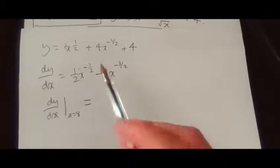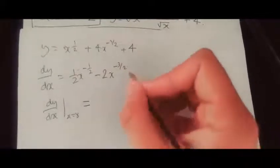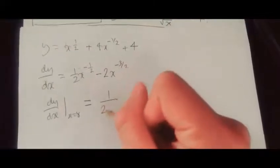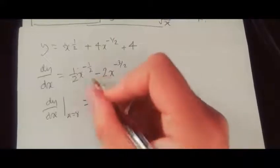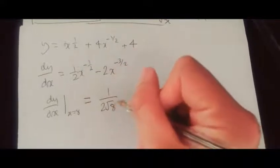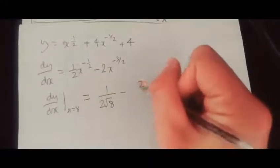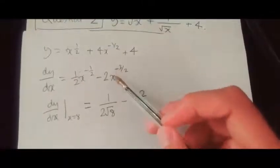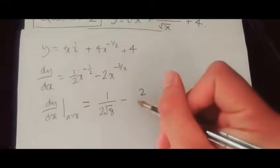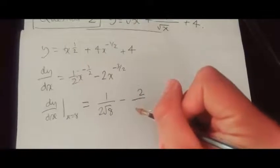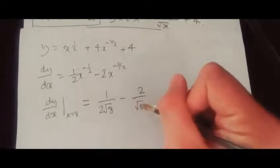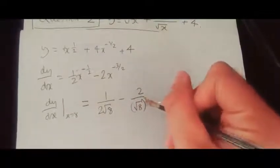We're going to put it into the same format as the question itself. We have 1 over 2 root x. When x equals 8, we replace it with 8, minus 2. Now in this case it's going to be underneath, so it'll be root x cubed underneath, or in our case root 8 cubed.